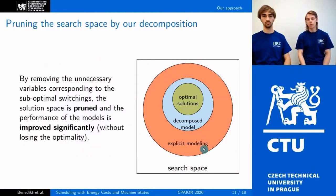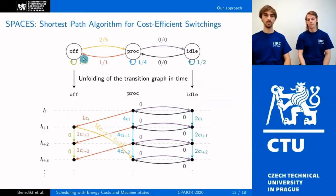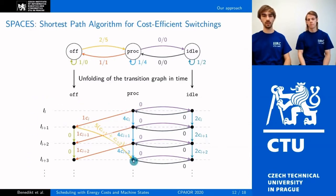The important property of the decomposition is preservation of optimality with respect to the original scheduling problem. The idea of pre-processing is illustrated on this slide. We take the transition graph of the machine and unfold it in time over all intervals. We then compute the shortest path between the processing states in this unfolded graph. This gives us the optimal switching cost between all possible start times of two consecutive jobs. Once computed, we integrate these costs into the models.